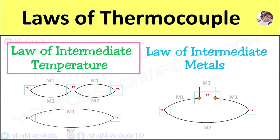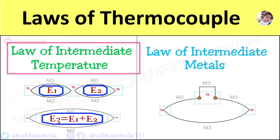It states that if a simple thermocouple circuit develops an emf e1 when its junctions are at temperature t1 and t2, and emf e2 when its junctions are at temperature t2 and t3, then it develops an emf e3 — equal to e1 plus e2 — when its junctions are at temperature t1 and t3.